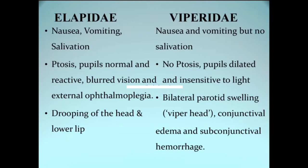Comparing systemic symptoms by family: Elapidae cause nausea, vomiting, and salivation, whereas Viperidae cause nausea and vomiting but without salivation. In Elapids, eyelids droop (ptosis) and pupils are normal and reactive to light; in Viperidae there is no ptosis. The head droops and the lower lip droops in Elapids due to neurotoxicity. In Viperidae, there is bilateral swelling of the parotid gland — known as 'viper head' — along with conjunctival edema and subconjunctival hemorrhages.